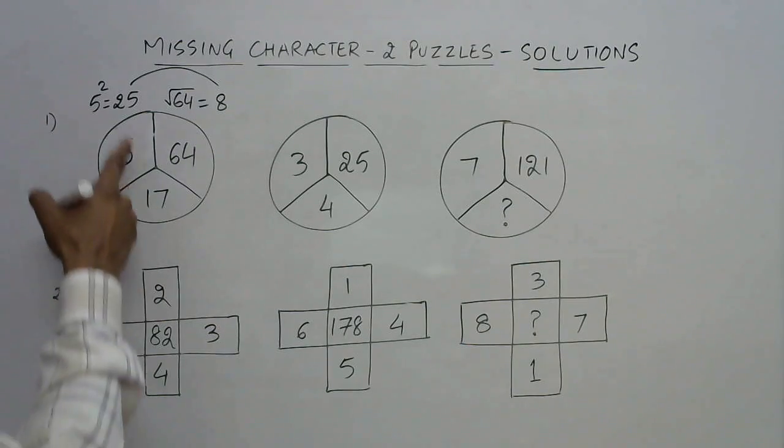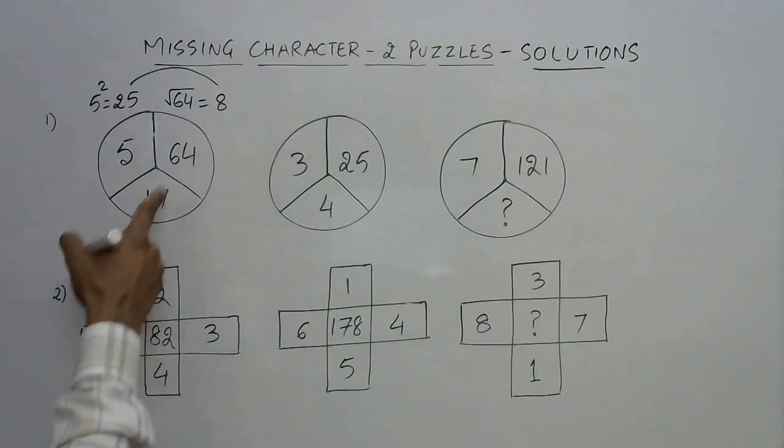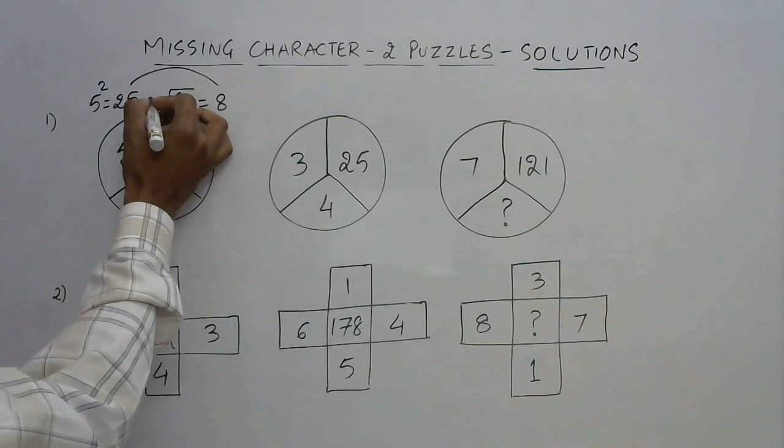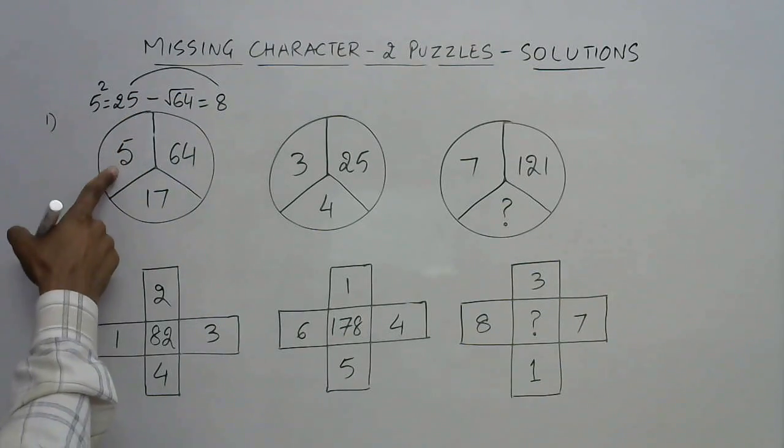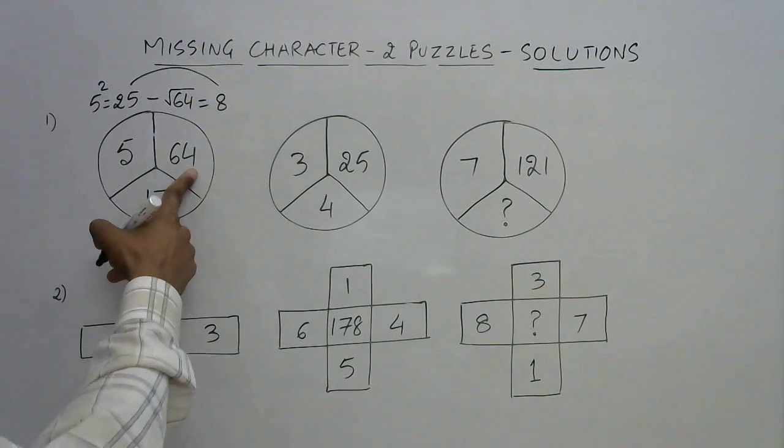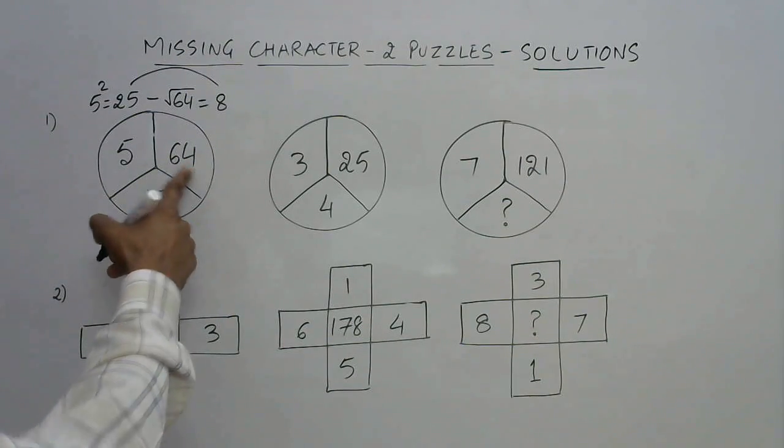And the difference of these two numbers will give you this number 17. 25 minus 8 is 17. So what you have to do is subtract the square of the number on the left and square root of the number on the right to get to the number which is written below.